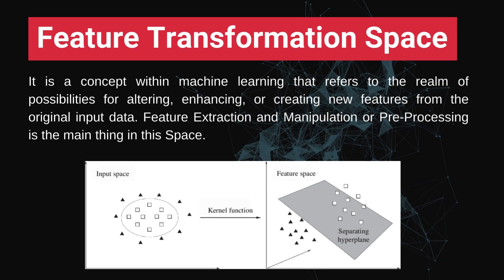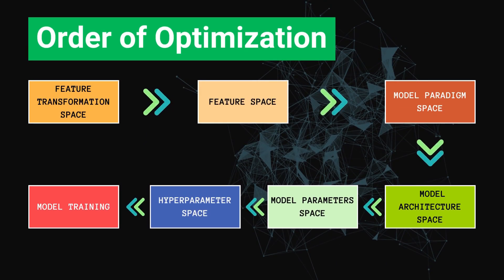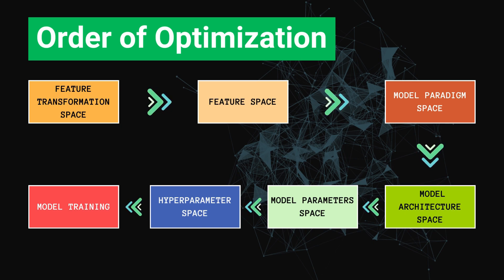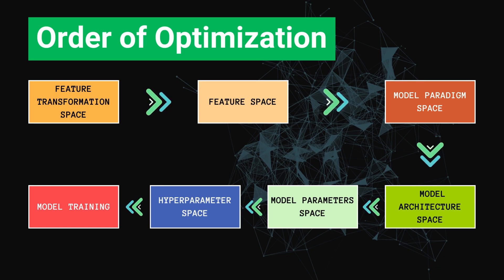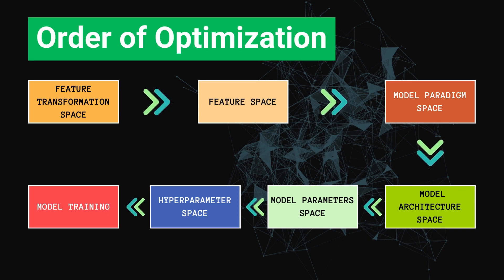Now that you know all the optimization techniques, how do they actually work? They work in this order: first you work in the feature transformation space, then you select features from the feature space, then you select the machine learning model in the model paradigm space, then you go to model architecture space if using deep learning, then you set the model parameters, and if needed you go to hyper parameter space before model training.